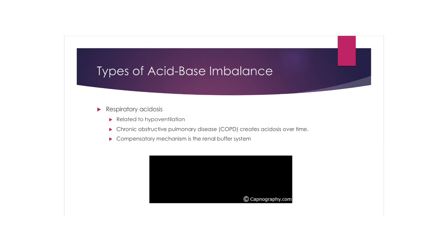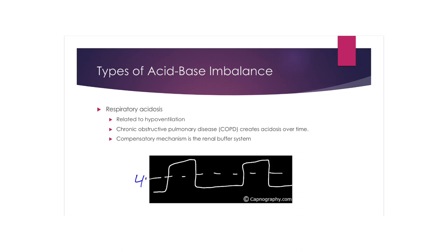Signs and symptoms of respiratory acidosis include systemic or cerebral vasodilation, headaches, lightheadedness, warm flushed skin, CNS depression, bradypnea, nausea, and vomiting. COPD creates a respiratory acidosis over time. Use capnography to help identify this — when a patient is hypoventilating, they'll develop elevated end-tidal CO2 greater than 45, and the waveform will be slower because they're not ventilating as fast. Breathing too shallow can also be a type of hypoventilation.